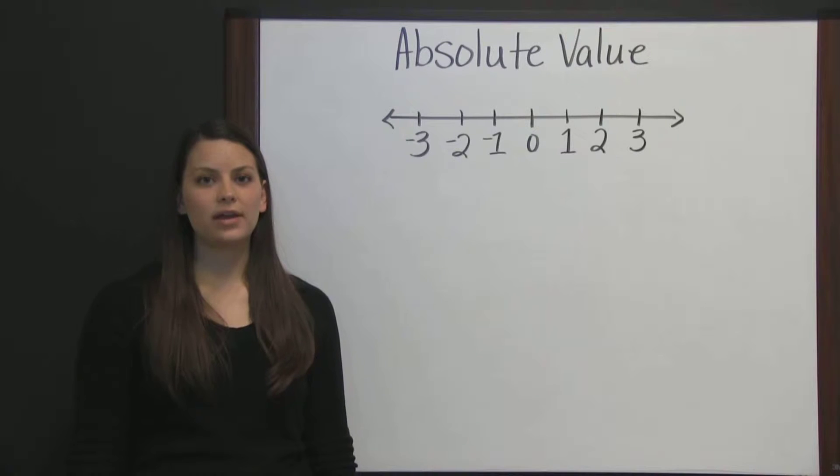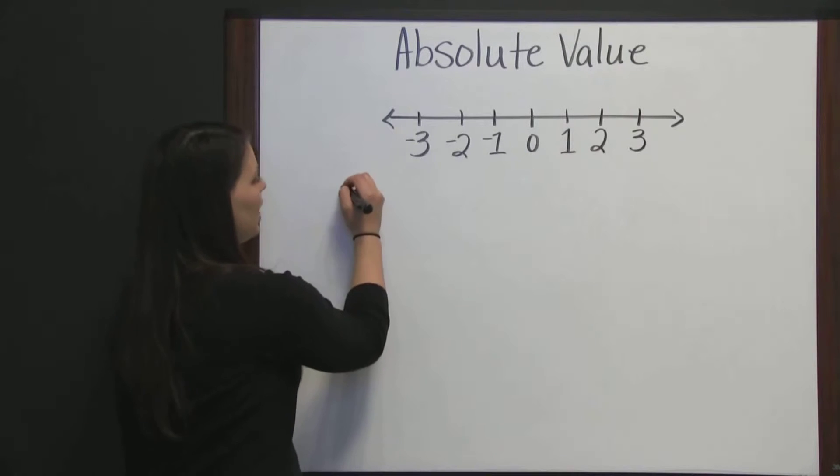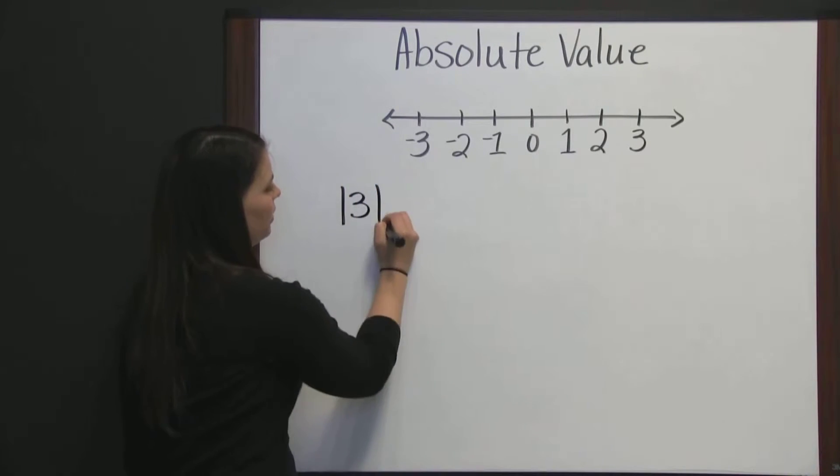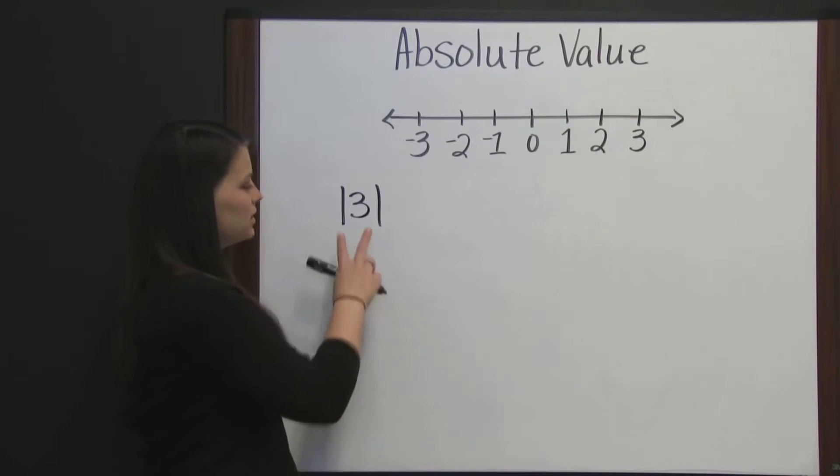It's denoted by a pair of vertical lines surrounding the value, such as the absolute value of three. You can think of absolute value like you're being asked a question, and the question is,